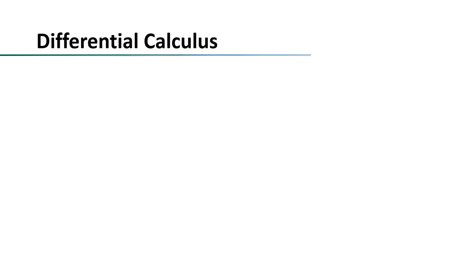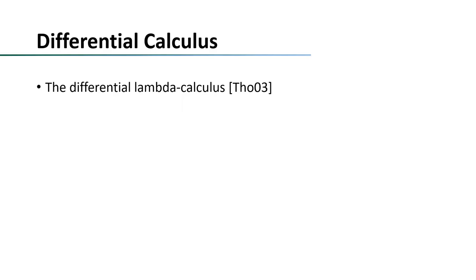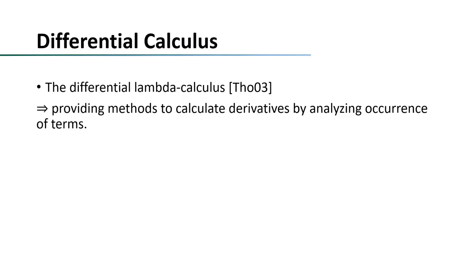What is differential calculus? We can first take a look at previous works. There are two main branches. One is the differential lambda calculus, first introduced in 2003. In that paper, differentiation is presented as analyzing occurrence of terms, and it later magnifies many deep connections with category theory and automatic differentiation.